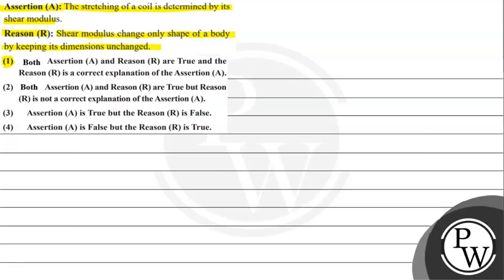Option 1: Both assertion and reason are true and reason is the correct explanation of assertion. Option 2: Both assertion and reason are true but reason is not a correct explanation of the assertion. Option 3: Assertion is true but reason is false. Option 4: Assertion is false but reason is true.